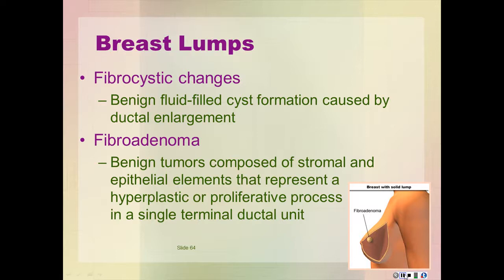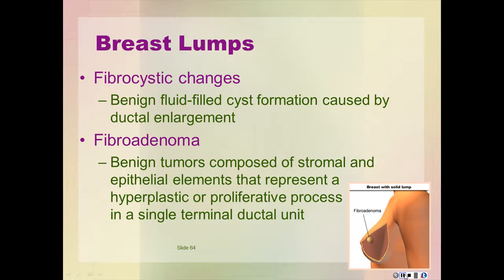Fibrocystic changes are caused by benign fluid-filled cyst formation caused by ductal enlargement. They are usually bilateral and multiple, occurring in women aged 30 to 55, most often associated with a long follicular or luteal phase of the menstrual cycle. Tender and painful breasts or palpable lumps that may fluctuate with menses are common. Fibroadenomas are benign tumors composed of stromal and epithelial elements that represent a hyperplastic or proliferative process in a single terminal duct unit. They may occur in girls and women of any age during their reproductive years and may be asymptomatic until discovery in clinical breast exam. After menopause, these usually painless tumors will often regress.